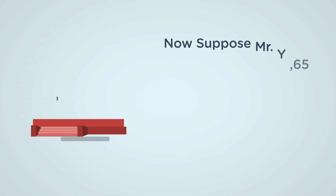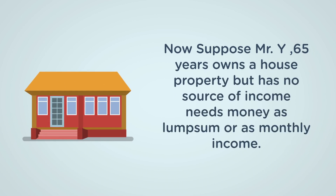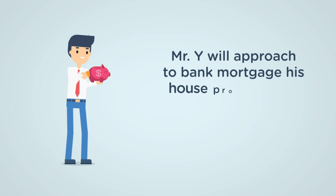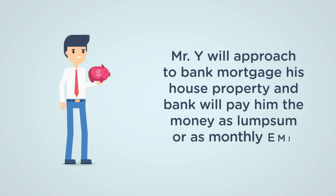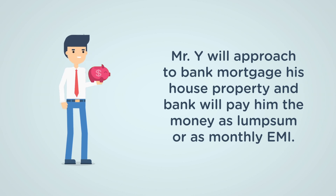Now suppose Mr. Y, 65 years old, owns a house property but has no source of income and needs money as a lump sum or as monthly income. Mr. Y will approach the bank, mortgage his house property, and the bank will pay him the money as a lump sum or as monthly EMI.